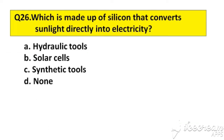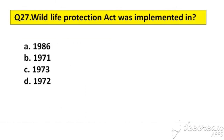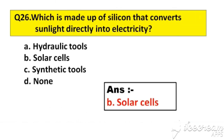Question number 26. Which is made up of silicon that converts sunlight directly into electricity? Option A: Hydraulic tools. B: Solar cells. C: Synthetic tools. D: None. The right answer is option B, Solar cells.